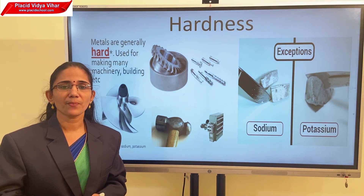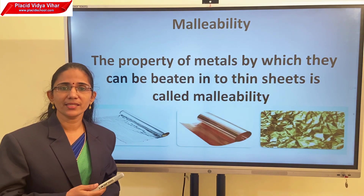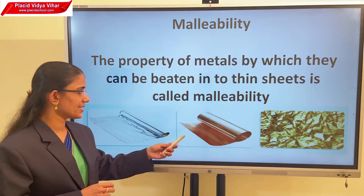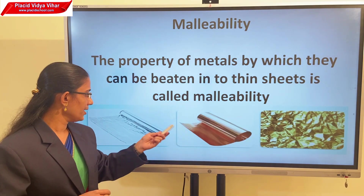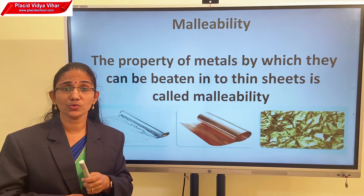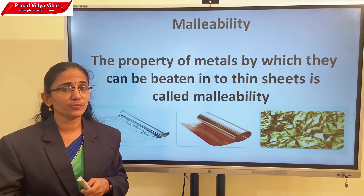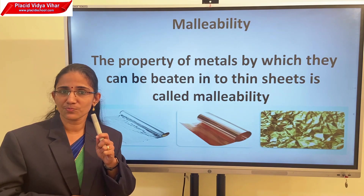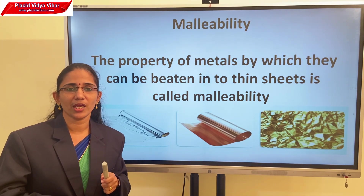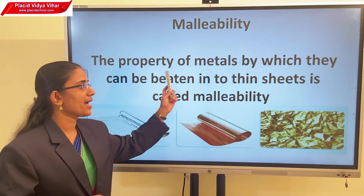The next property is malleability. Malleability means the ability of a metal to change into a thin sheet when beaten. Examples include gold, copper, and aluminum foil. Have you observed aluminum foil used to wrap food items or for decorating sweets? These aluminum foils are formed by beating a small piece of aluminum. Most of the metals can change shape into thin sheet form — that property is called malleability.